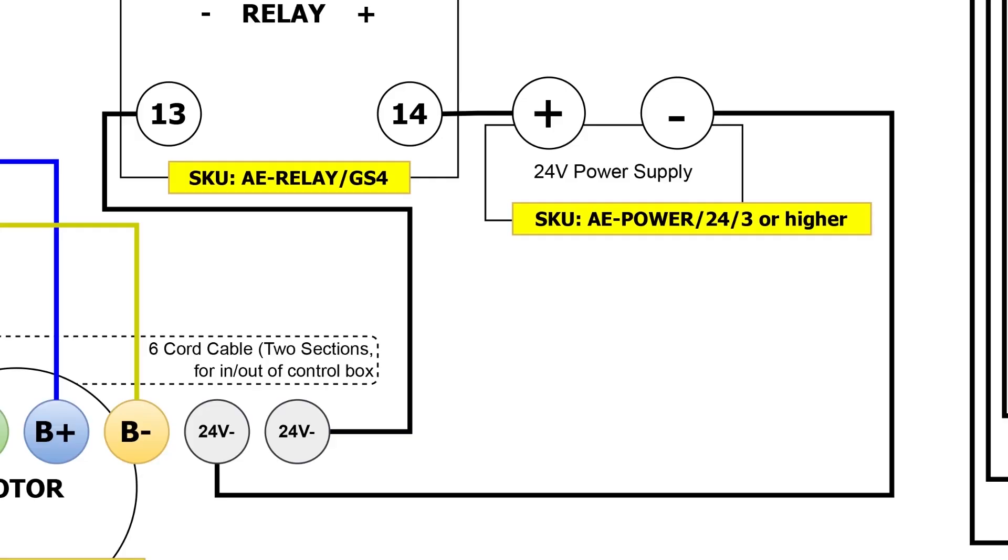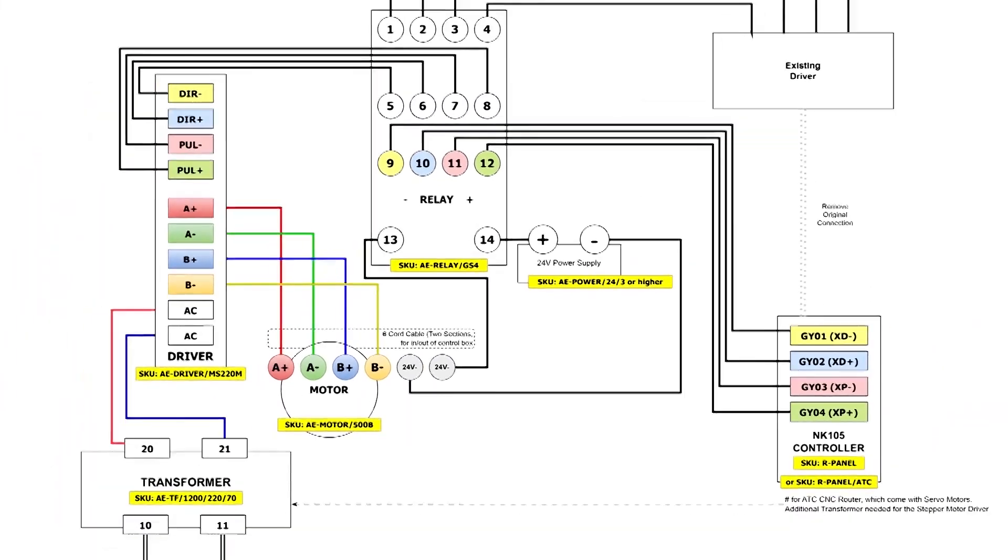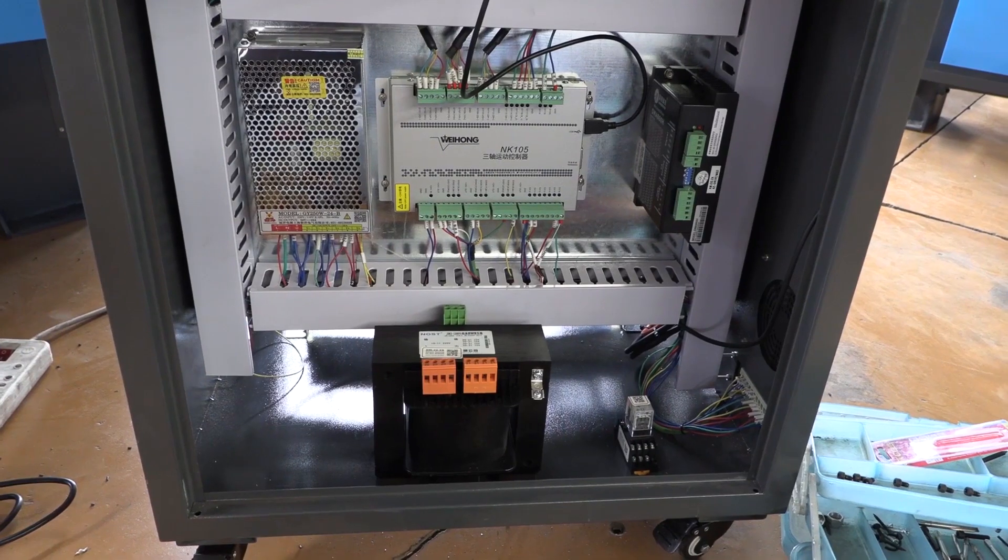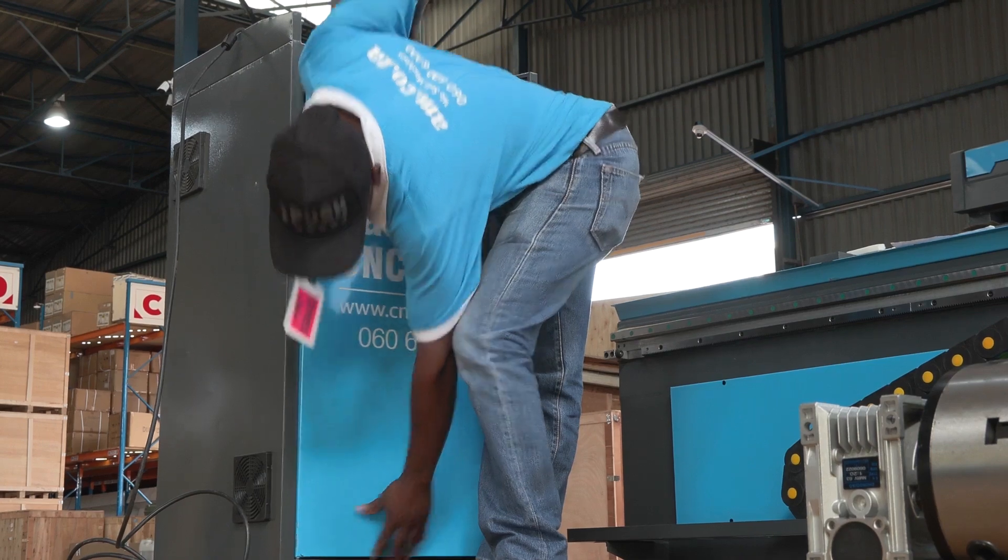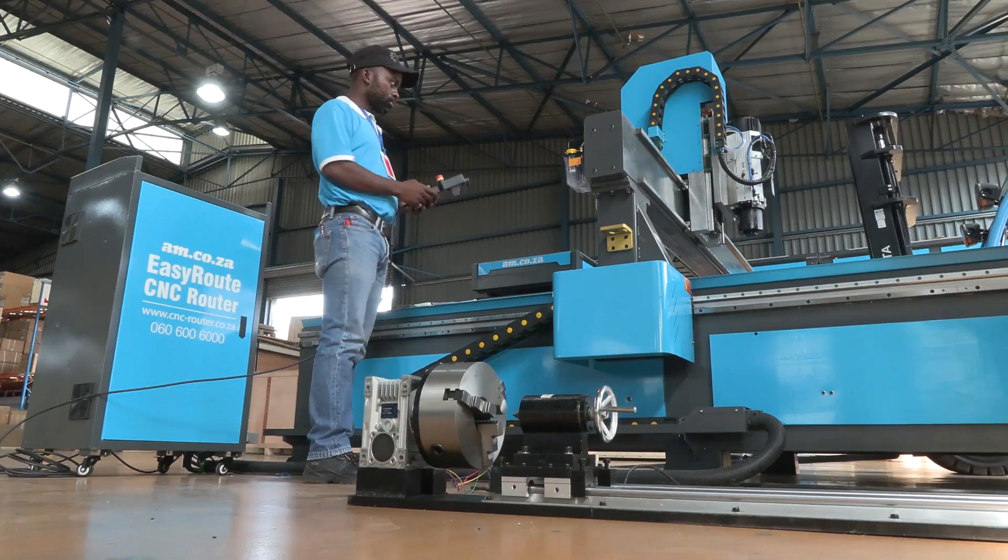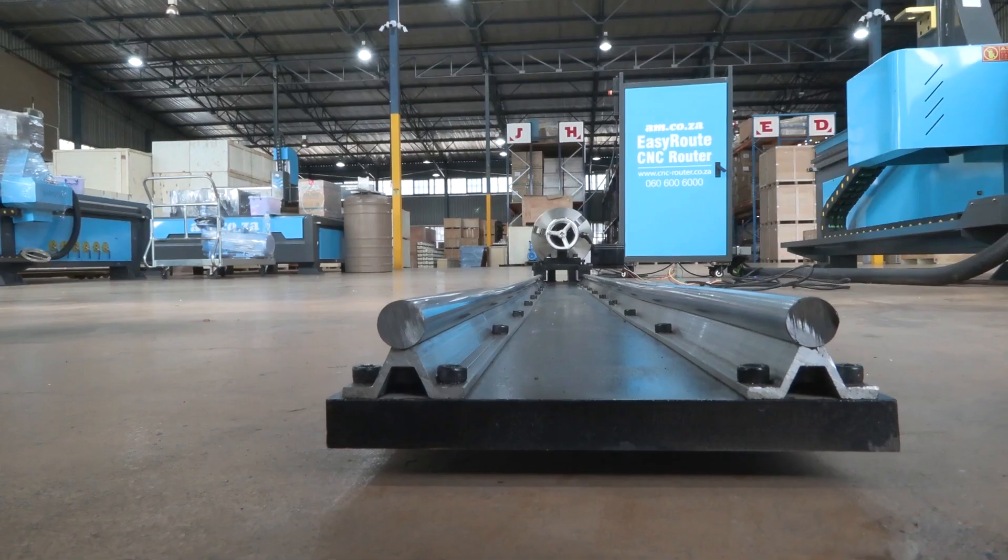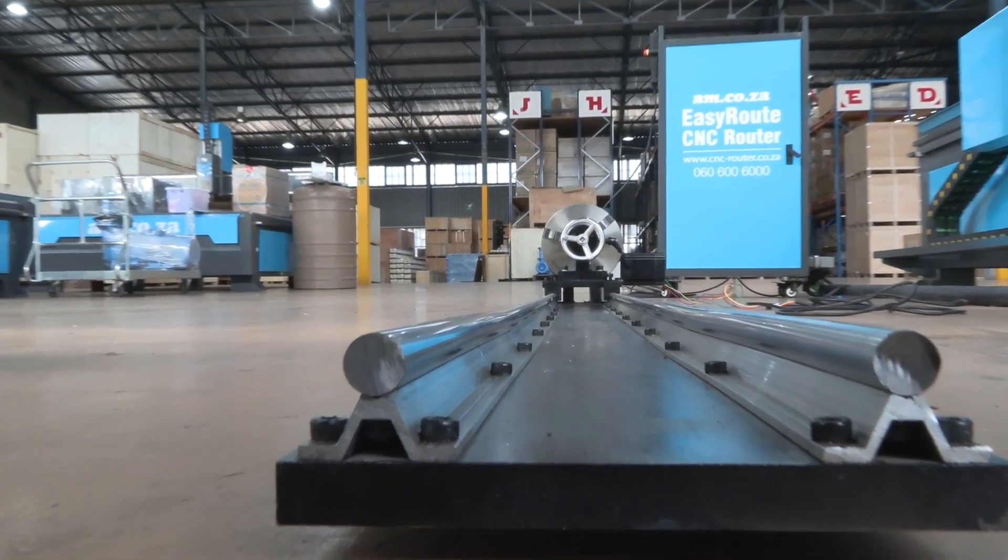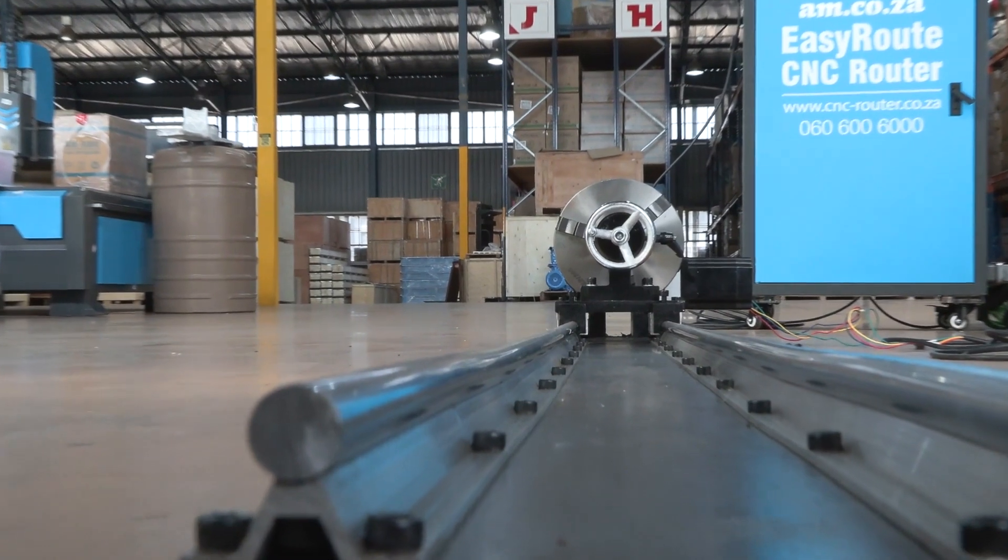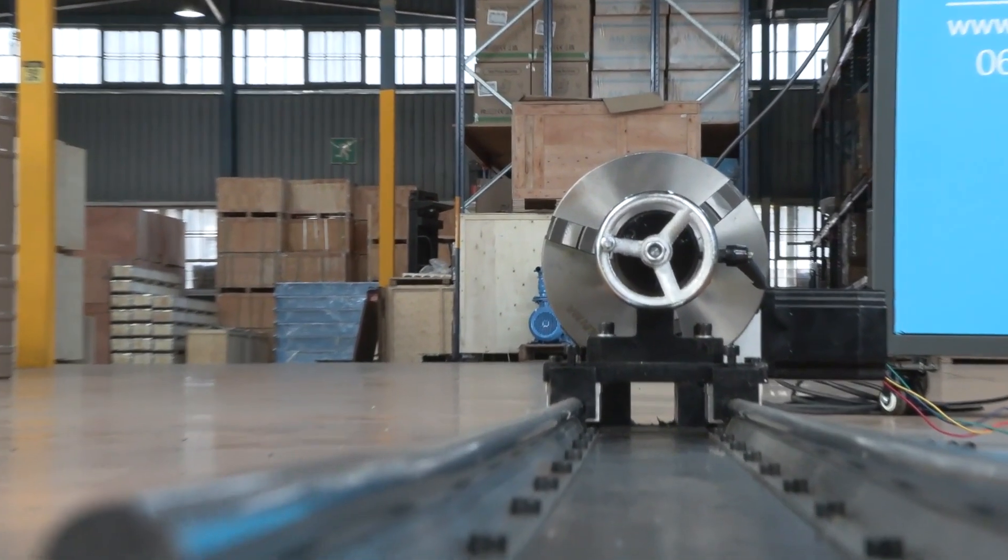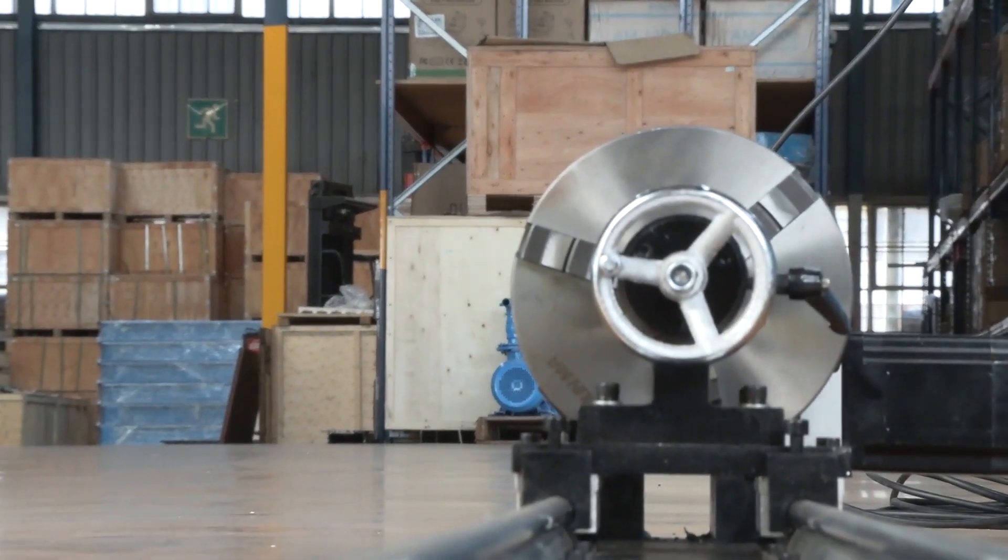this configuration, you are now able to use the CNC as per normal and switch over to the rotary straight from the remote control. Again, we highly recommend that you make use of AM.co.za technicians for the installation of the rotary unit on your CNC router. To find out more about the rotary unit, you are welcome to call sales.